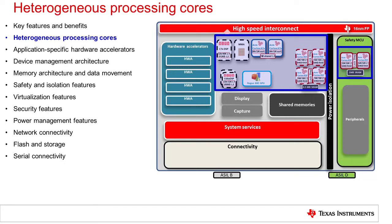In this section I will give a brief overview of each of the available processing cores on the SoC, including the MPU, DSP, and GPU cores available in the main domain of the device, as well as the MCU cores available in the main domain and the safety MCU domain of the device.